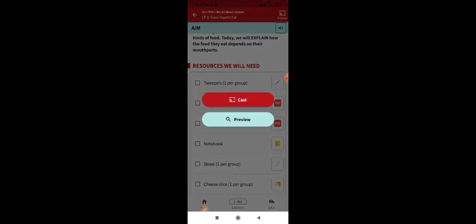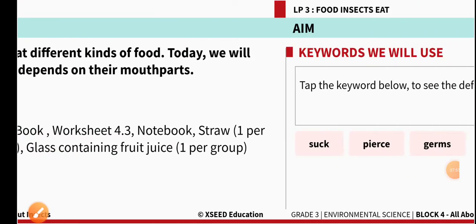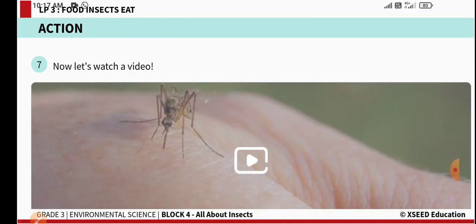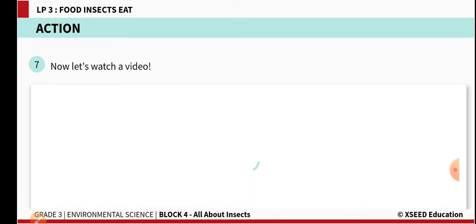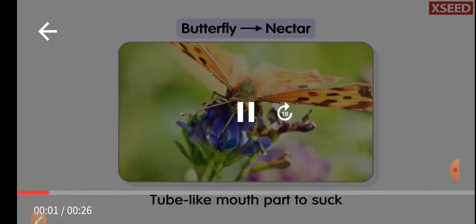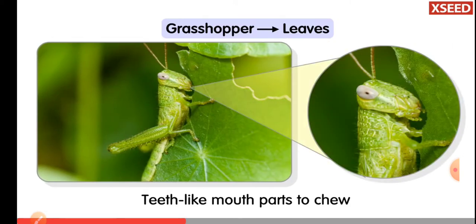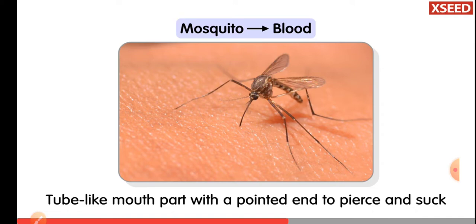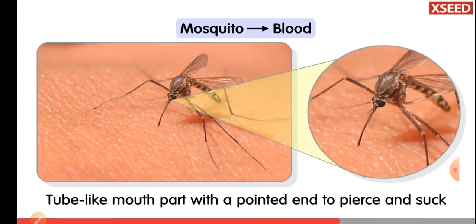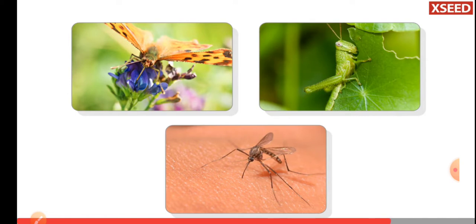Now we will see the video. A butterfly has a long tube-like mouth part to suck nectar. A grasshopper has teeth-like mouth parts to bite and chew. A mosquito's mouth helps it to pierce and suck. Different insects have different mouth parts that help them eat. Understood, Jilin?